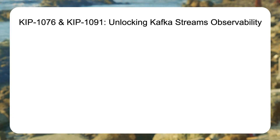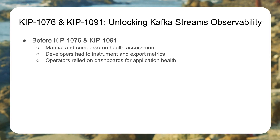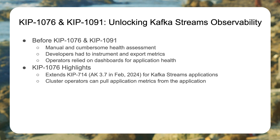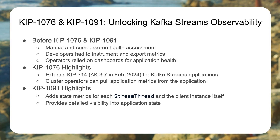Moving on to Kafka Streams: KIP 1076 and KIP 1091 address observability. Before, you had to be very specific as a developer of a Streams application and manually expose all the metrics you wanted reported — difficult and requiring manual work. KIP 1076 extends KIP 714, which allows the cluster to pull observability data from the client itself, so cluster operators can now access the state of the application. A managed Kafka provider, for example, can build observability tooling that reports in detail on the state of your Kafka Streams app. KIP 1091 extends that further with metadata about stream threads inside the Kafka Streams application.